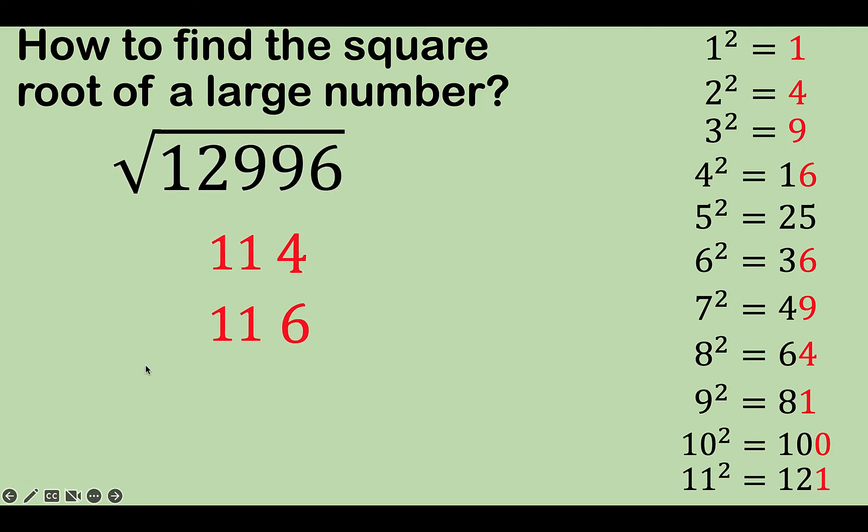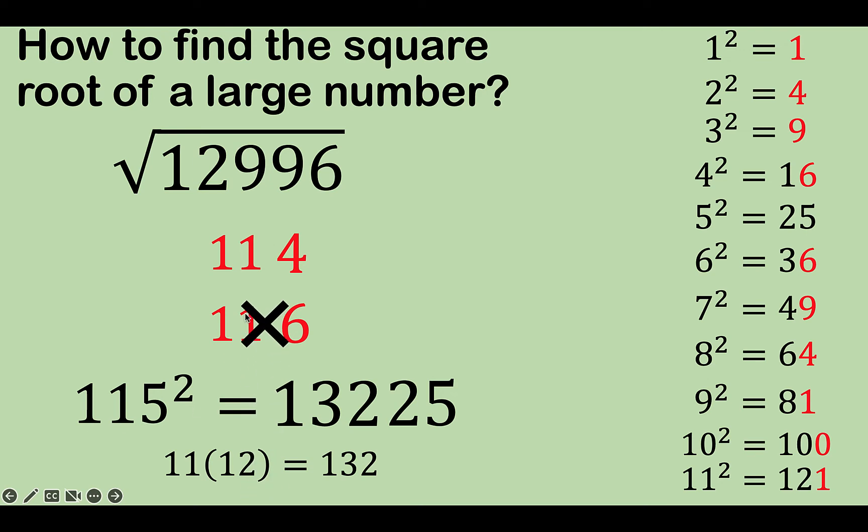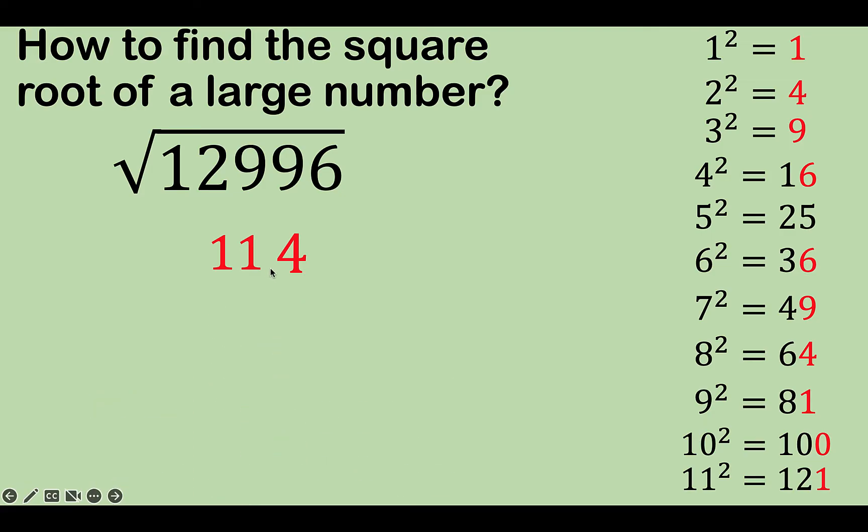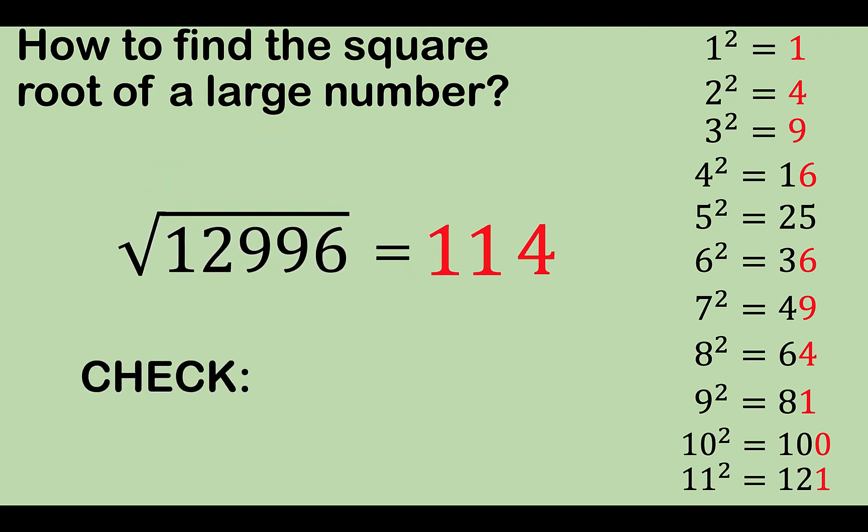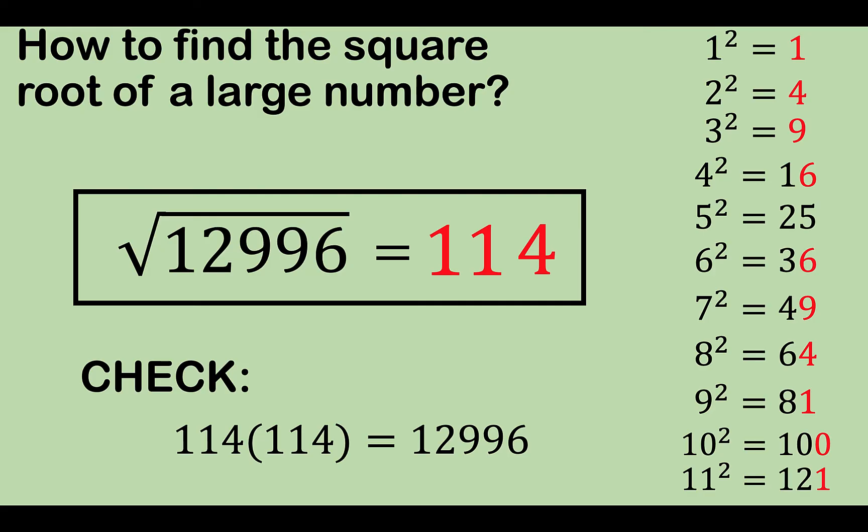And again, let's take 115 as our test number, because this is easier to square. We square 5 to get 25, get 11, and multiply it by the number that is 1 more than 11, and that is 12, and that is 132. So we now have 13,225 compared to 12,996. So this number here is less than 115 squared. Therefore, 116 cannot be our answer. And so we settled with 114. And to check, 114 times 114 is equal to 12,996. And so 114 is our answer.